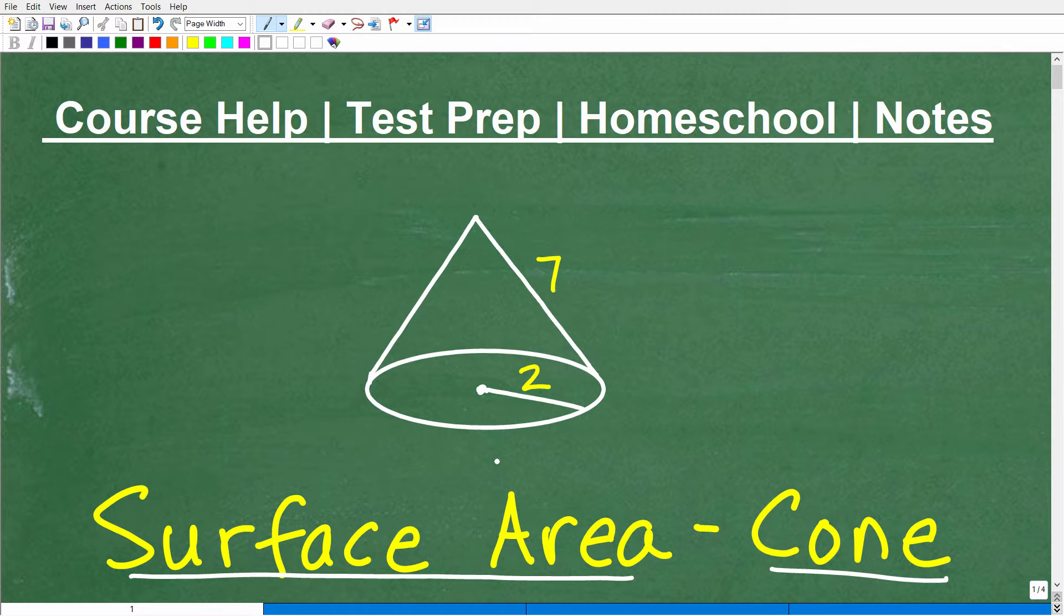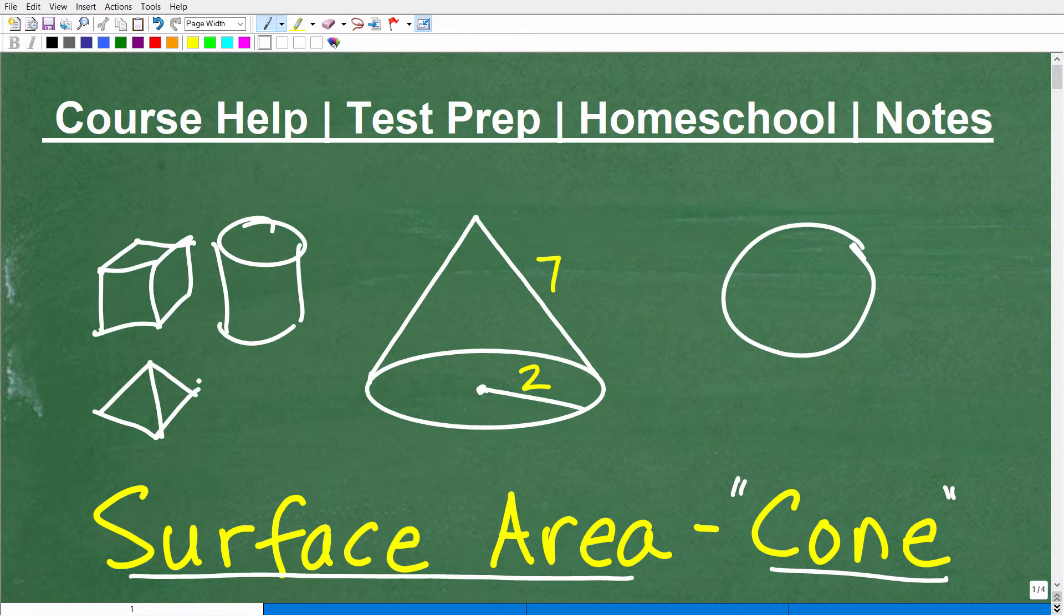I'm going to show you the formula here in a second, but a cone is what we kind of classify as a basic figure. Let me put a couple other basic figures here. A sphere would be another one. A cube would be another basic figure. A cylinder is another basic type of figure. A pyramid is another basic type of figure.